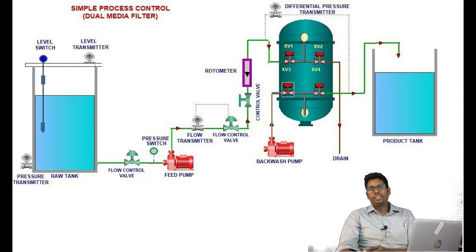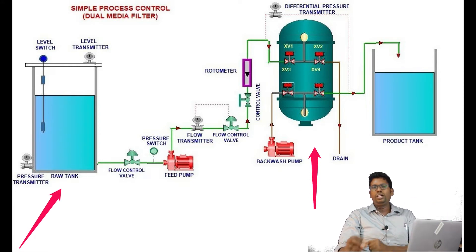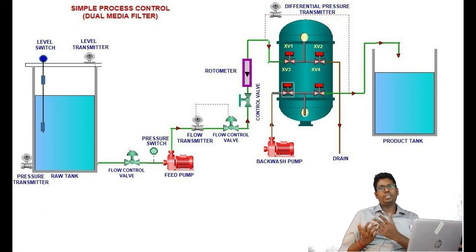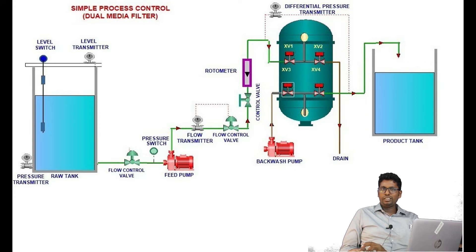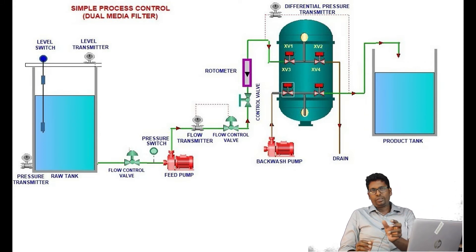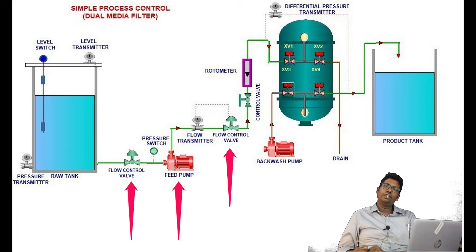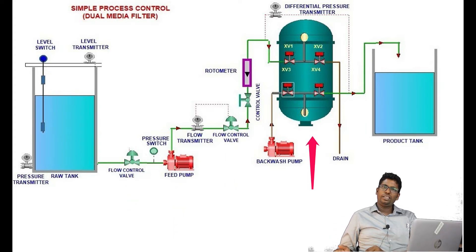For example, there are two tanks. In a tank, we fill the water — this is a water treatment plant. In a tank, there is an outlet line. There is a valve — manual valve or auto valve. There is a pipeline, then a pump connected, then a discharge valve or pressure. Then there is a filter, with valve arrangements.